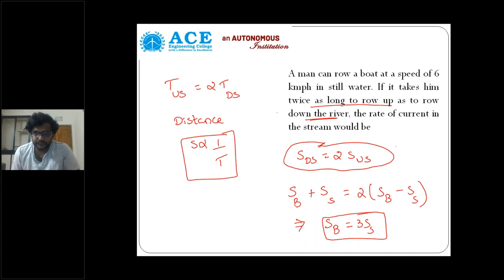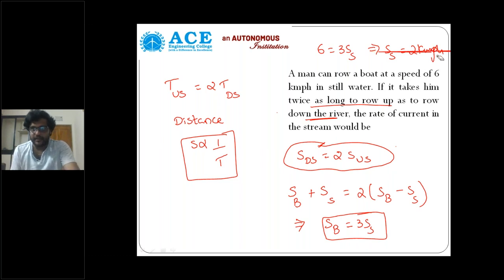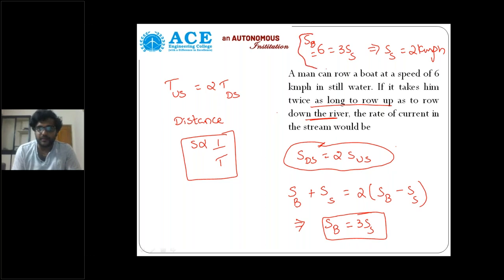Speed of boat is thrice speed of stream — speed of current, rate of stream. The given speed of boat is six, we have to calculate speed of stream. Speed of boat is six, that is equal to thrice speed of stream. So once you calculate, speed of stream or speed of water flow is nothing but two kilometers per hour.